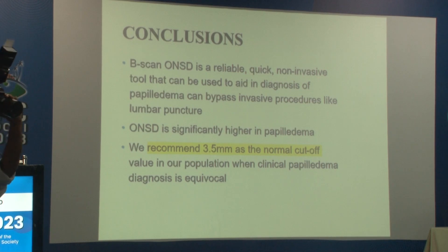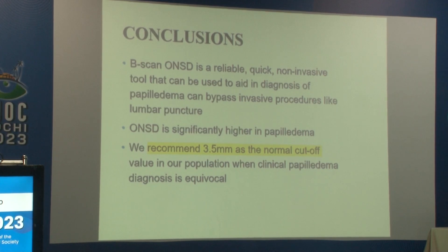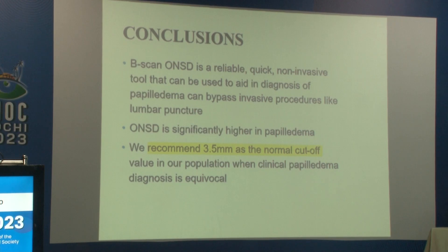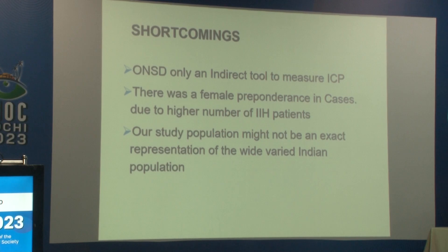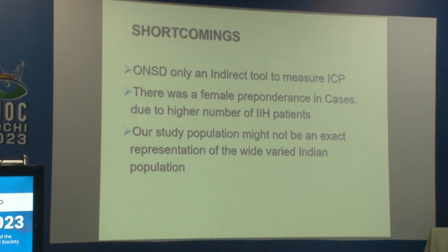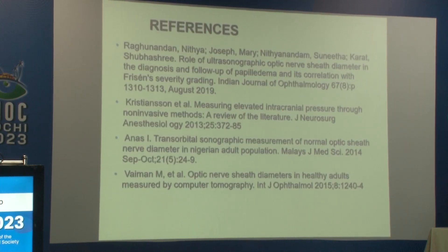In conclusion, we recommend 3.5 mm as the normal cutoff value in our population when clinical papilledema diagnosis is equivocal. B-scan ONSD is a reliable, quick, non-invasive tool that aids in diagnosis of papilledema and can bypass invasive procedures like lumbar puncture. ONSD is significantly higher in papilledema. Limitations include that ONSD is an indirect measure of ICP, female preponderance due to higher IIH cases, and the study population may not represent the broader Indian population.